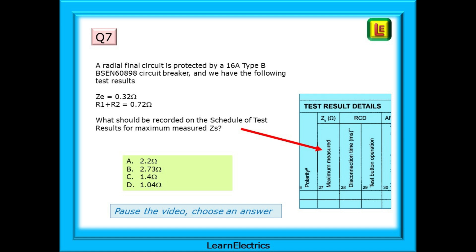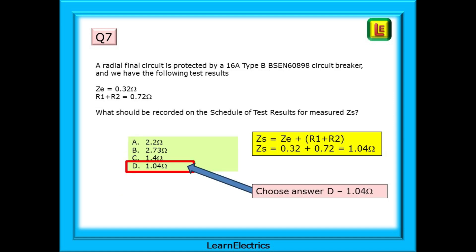ZS is equal to ZE plus R1 plus R2. So we have 0.32 plus 0.72 which is equal to 1.04 ohms. So choose answer D.